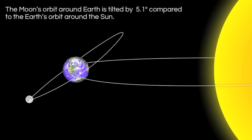The moon is orbiting the Earth, and at the same time the Earth is orbiting the sun, making for some fairly complex motions. The moon's orbit around the Earth is not parallel to the Earth's orbit around the sun — the moon's orbit is tilted. The diagram is greatly exaggerated, but in reality the tilt is only about 5 degrees. However, this tilt becomes very important when we discuss lunar and solar eclipses.